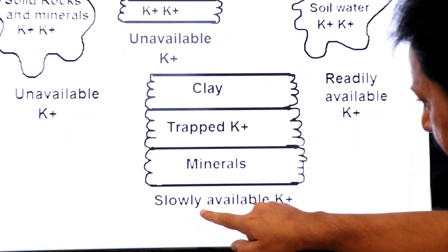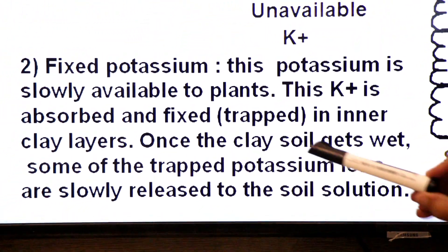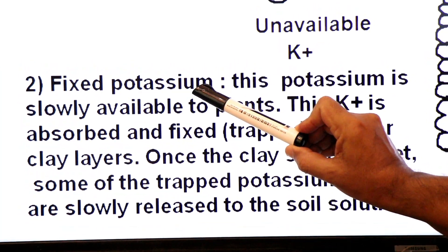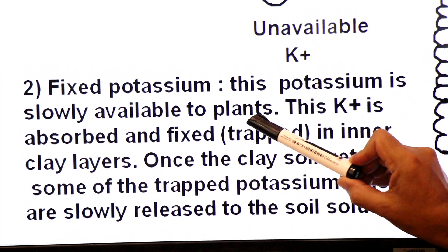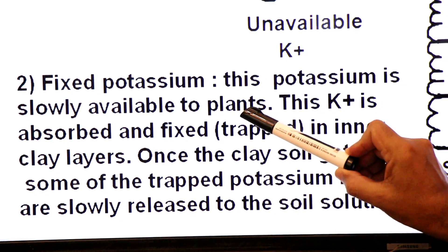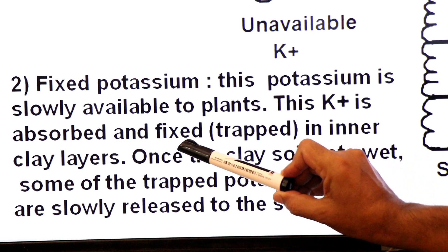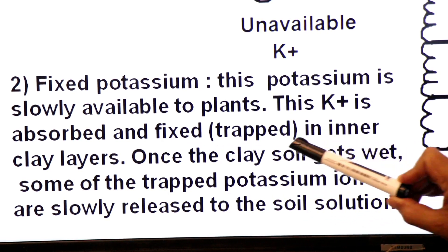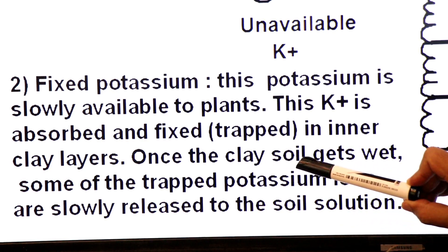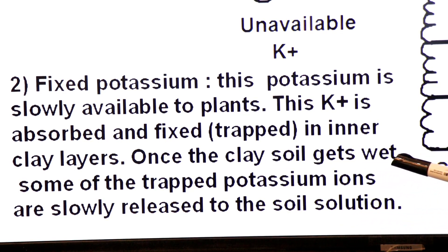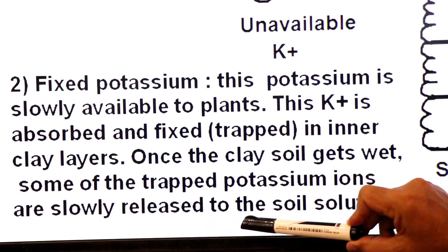Now we come to the second form: slowly available potassium. Dear students, it is also called fixed potassium. This potassium is slowly available to plants — dheerey dheerey it reaches plants. This potassium is absorbed and fixed, trapped in the inner clay layers, and once the clay soil gets wet, some of the trapped potassium ions are slowly released to the soil solution.